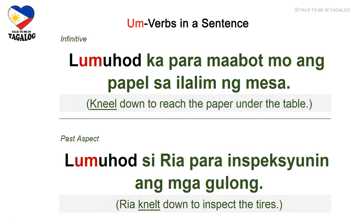Infinitive: lumuhod ka para maabot mo ang papel sa ilalim ng mesa. Lumuhod is to kneel down, maabot is to reach, papel means paper, ilalim is under, and mesa means table — kneel down to reach the paper under the table.